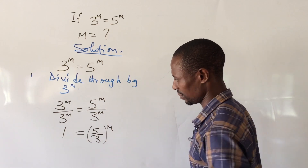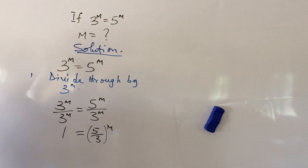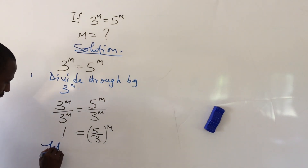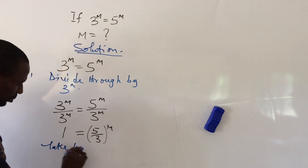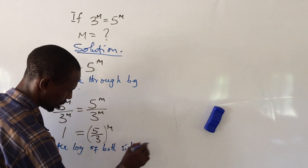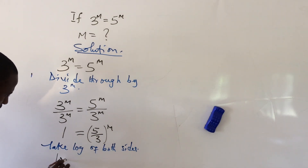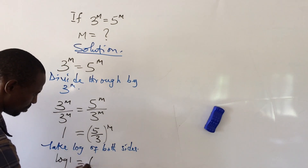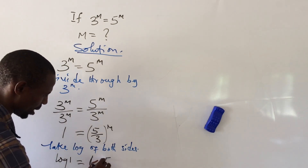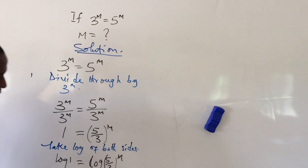We are looking for m here. So how do we get m? Let's take log of both sides. If we take log of both sides, this will give us log 1 equal to log of (5 over 3), all to the power of m.